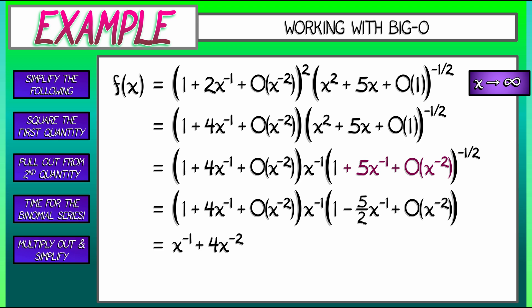Next, we have negative five-halves x to the minus 2. All of the other terms, when I multiply this out, are going to be in Big-O of x to the minus 3. I can't get anything more specific because of my original uncertainty. And so, with a little simplification, we see in the end, we get x to the minus 1 plus 3 halves x to the minus 2 plus Big-O of x to the minus 3.